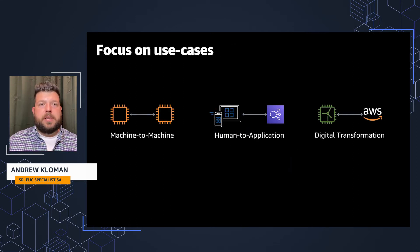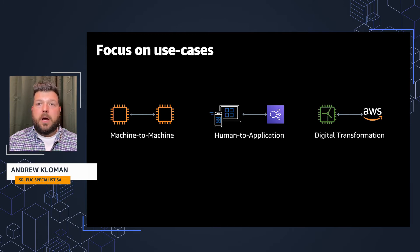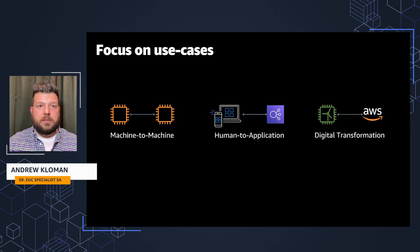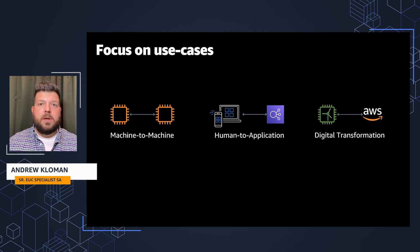In this presentation, we're talking about the human-to-application use case of zero trust. Other parts of zero trust can go into digital transformation or machine-to-machine backend infrastructure. But here, especially with Amazon AppStream 2.0, we're focused on the human-to-application story.